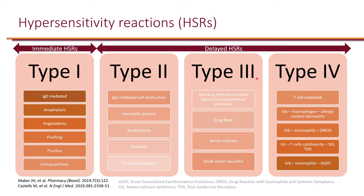Types 2 through 4 are the delayed hypersensitivity reactions — they won't occur within an hour, sometimes taking days or weeks. Type 2 is IgG-mediated cell destruction, and things like hemolytic anemia, neutropenia, petechia, and thrombocytopenia can manifest as a result.